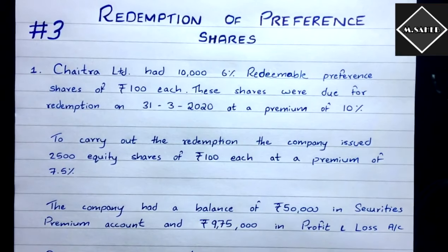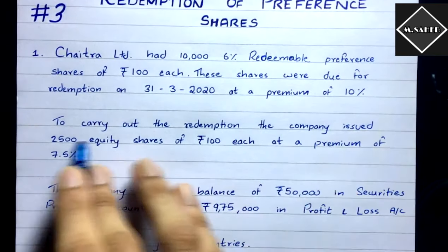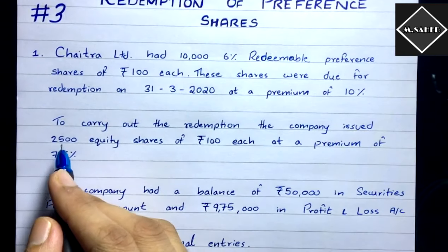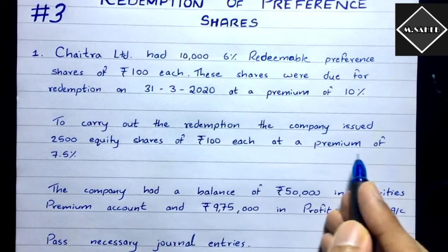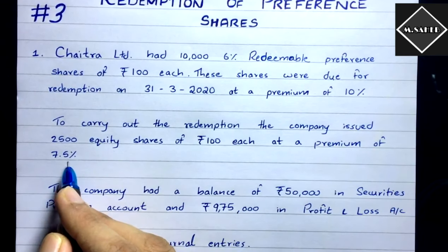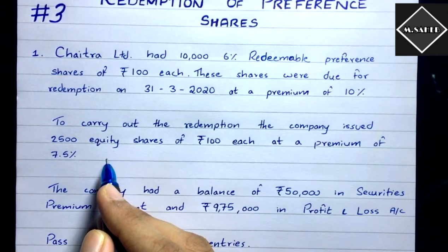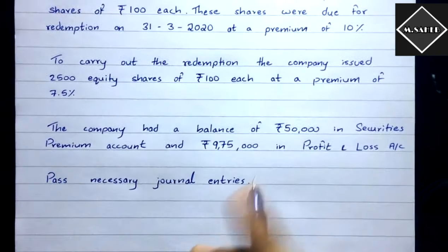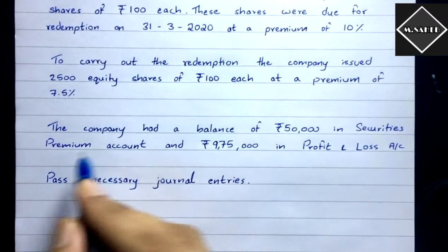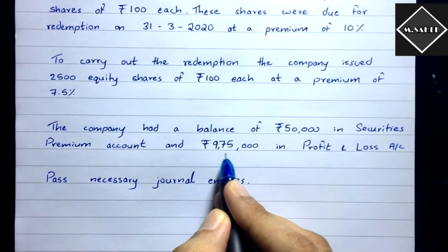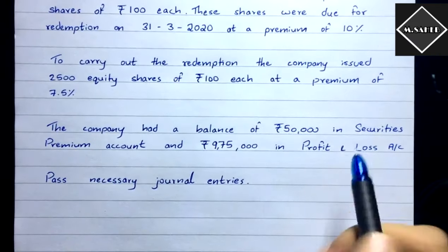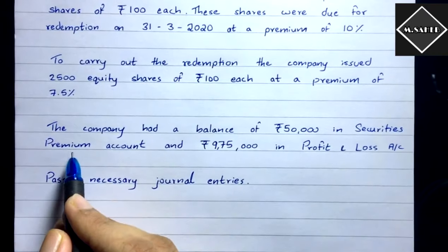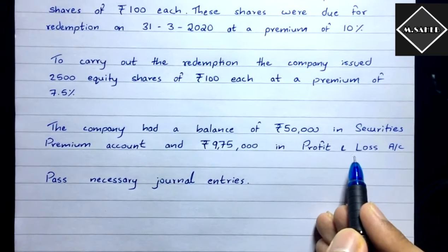To carry out the redemption, the company issued 2,500 equity shares of ₹100 each at a premium of 7.5%. The company also had a balance of ₹3,000 in the Securities Premium Account and ₹9,75,000 in the Profit and Loss Account. So we have two reserves: Securities Premium (a specific reserve) and Profit and Loss (a free reserve).